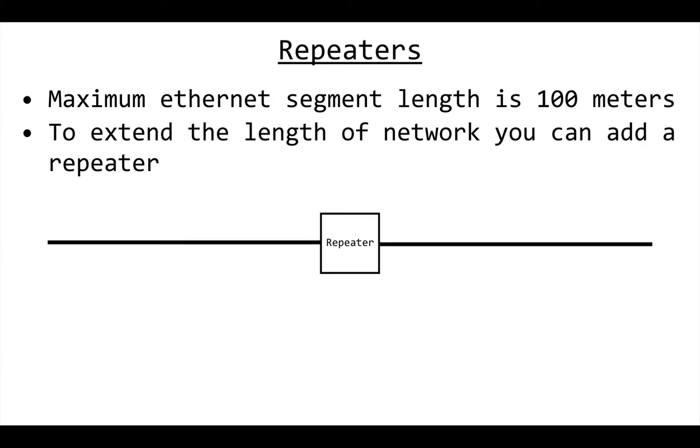You would connect up to the repeater and then on the other side you would have another network segment. A repeater is an electrical thing—it doesn't understand digital zeros and ones, it just sees an electrical signal.